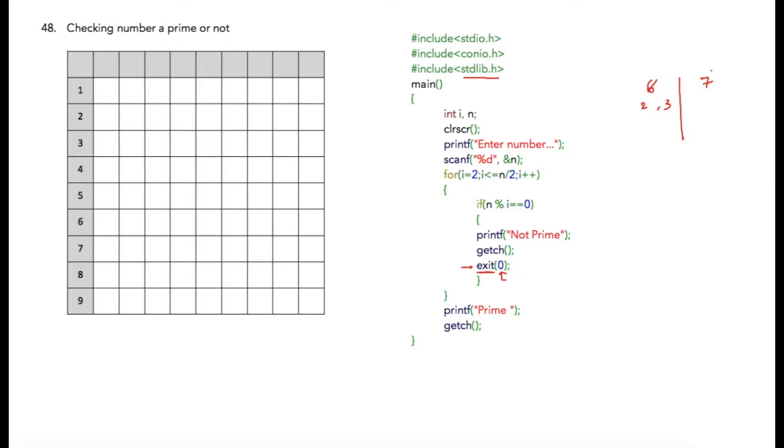However, if we check seven, seven is not divisible by any other number than one or seven. Hence seven is a prime number. So let us discuss logic for this program. Now by now you have simply understood that if you want to check whether the number is divisible or not, we just need to divide that number starting from two till that number.